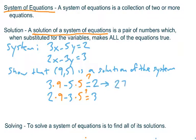3 times 9 is 27. 5 times 5 is 25. Is 27 minus 25 equal to 2? Yes. Good. But that's not good enough. It has to be a solution of both equations. Let's look at the second one. So 2 times 9 is 18. 3 times 5 is 15. Is 18 minus 15 equal to 3? Yes. That ordered pair makes both equations true. That's a solution of the system.